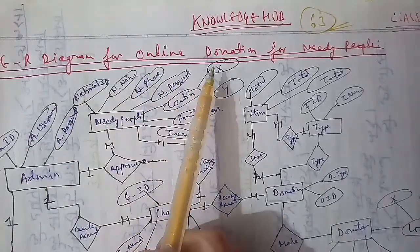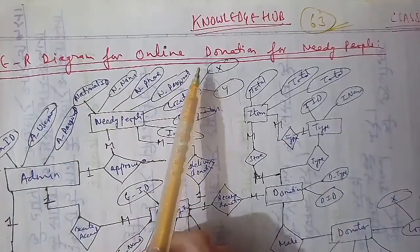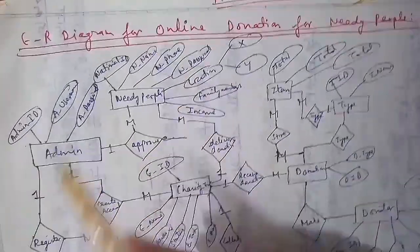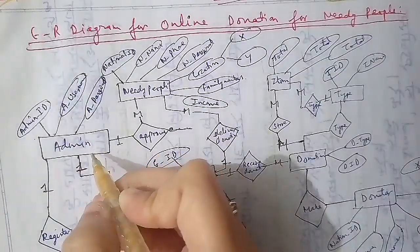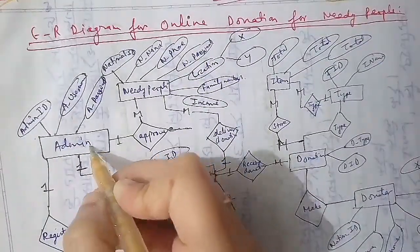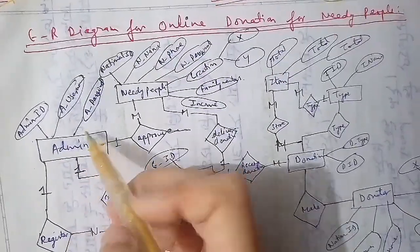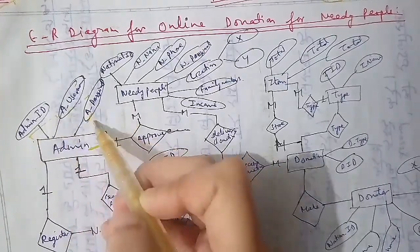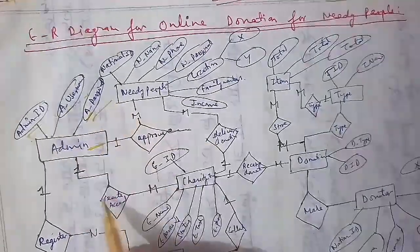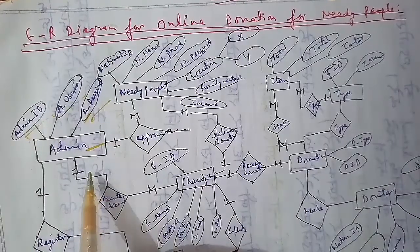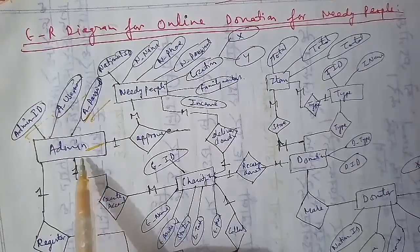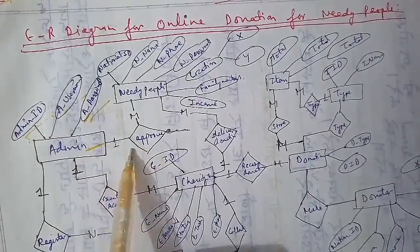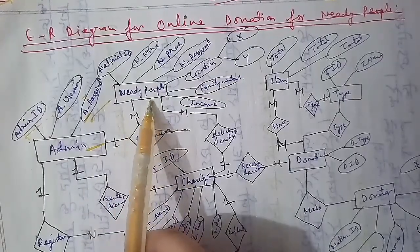We'll talk about the ER diagram for online donations for needy people. As you can see, this is the Admin entity. In terms of admin, we have the Admin ID, admin username, and admin password. The admin approves the needy people — not everyone can be a needy person; the admin has to verify and approve them.